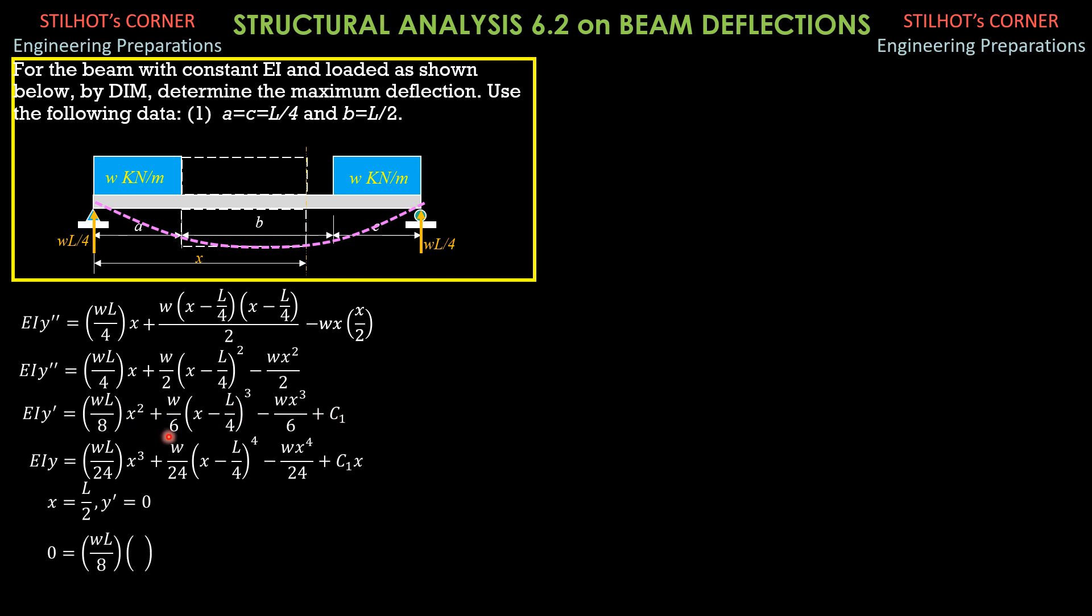Substitute into this equation to evaluate C sub 1. So 0 equals WL over 8 times L over 2 square plus W over 6 times quantity L over 2 minus L over 4 quantity cube minus W over 6 L over 2 quantity cube plus C sub 1. So all these terms are like terms, we write this and consider this positive minus this term here minus 1 over 8 quantity one half square minus 1 over 6 quantity one half minus one fourth quantity cube. Then we get C sub 1 equals negative 5 WL cube over 384.